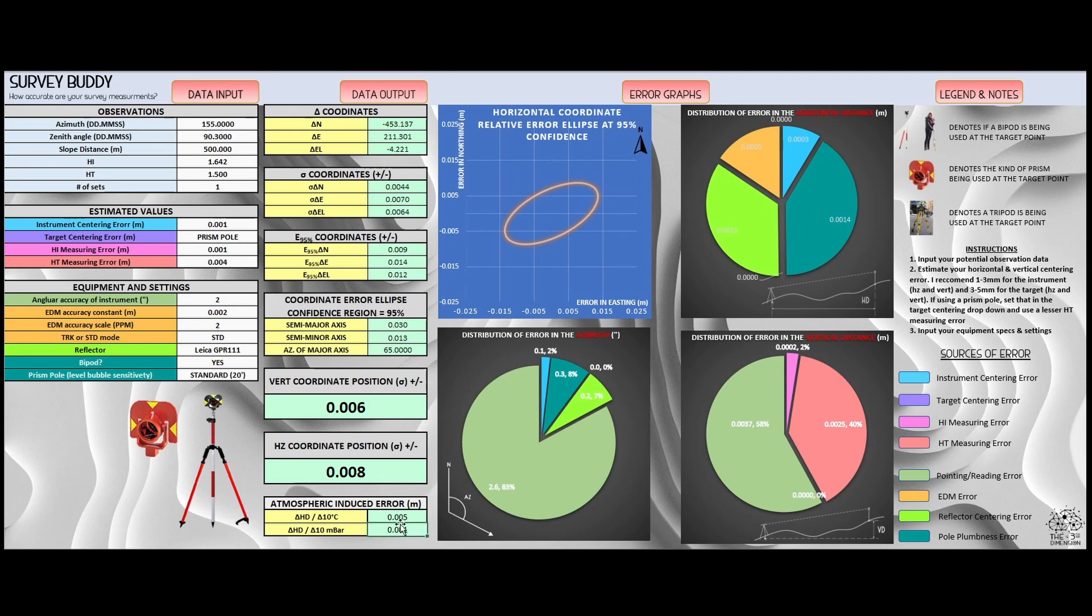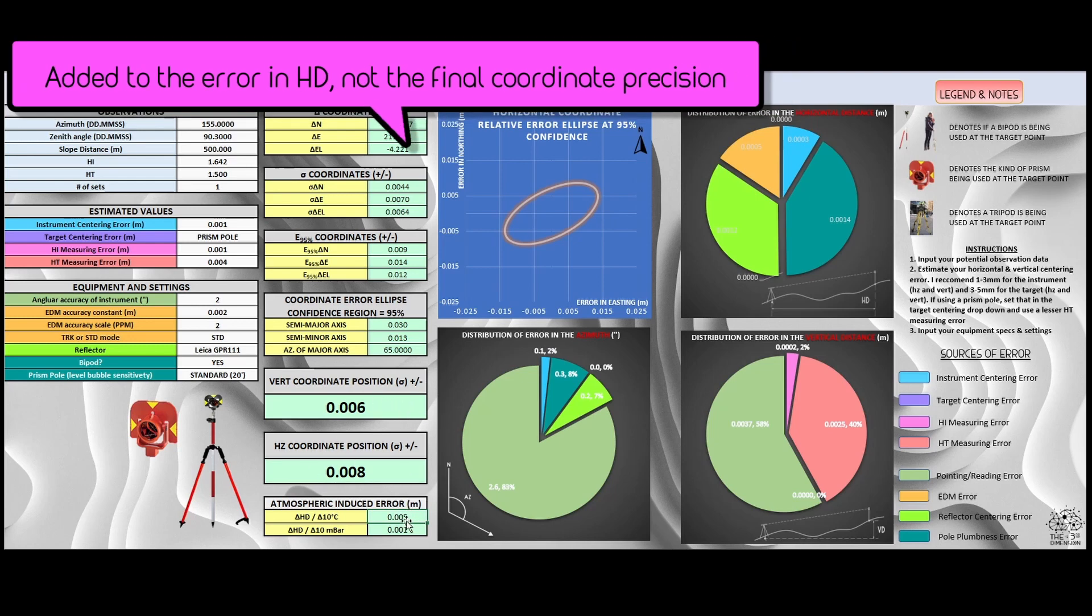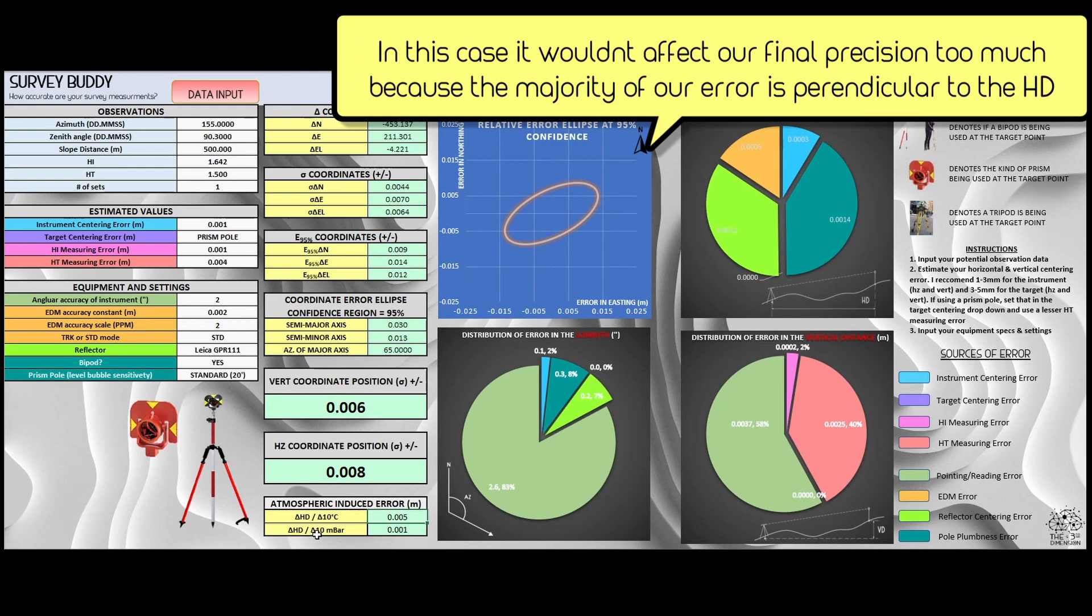I also put these two values in here. Say if you miss measure your temperature by 10 degrees Celsius, this is the extra bit of error that would be in addition to everything else we've talked about in the horizontal distance. This is given an observation at 500 meters. And again, if you miss measured your pressure by 10 millibars, this is the amount additional of error that would be introduced into your horizontal distance.